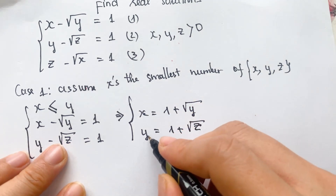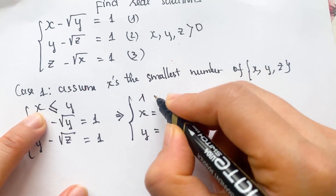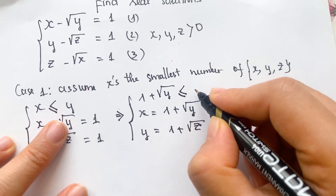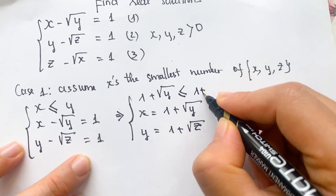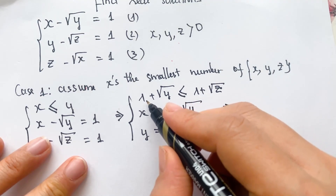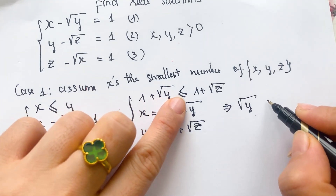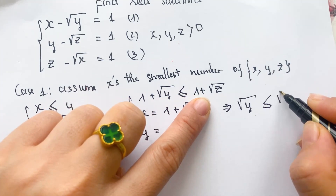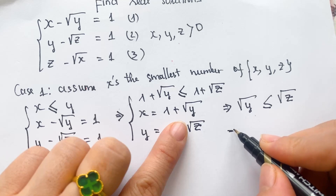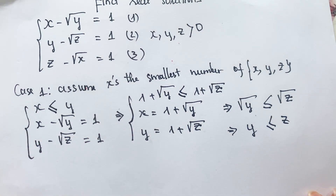We can replace x and y here, so we have one plus square root of y smaller than or equal to one plus square root of z. Therefore, square root of y is smaller than or equal to square root of z. Since y and z are greater than zero, we also have y smaller than or equal to z.